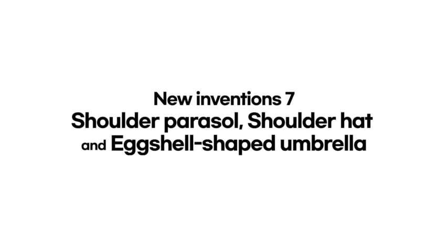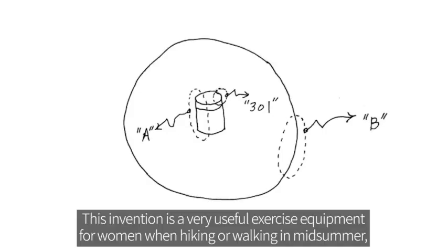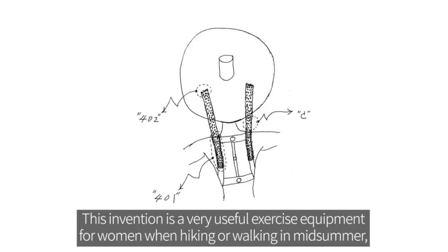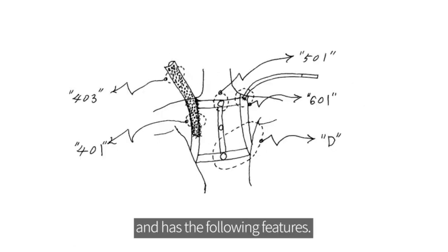New Invention 7: Shoulder Parasol, Shoulder Hat and Eggshell Shaped Umbrella. This invention is a very useful exercise equipment for women when hiking or walking in mid-summer and has the following features.